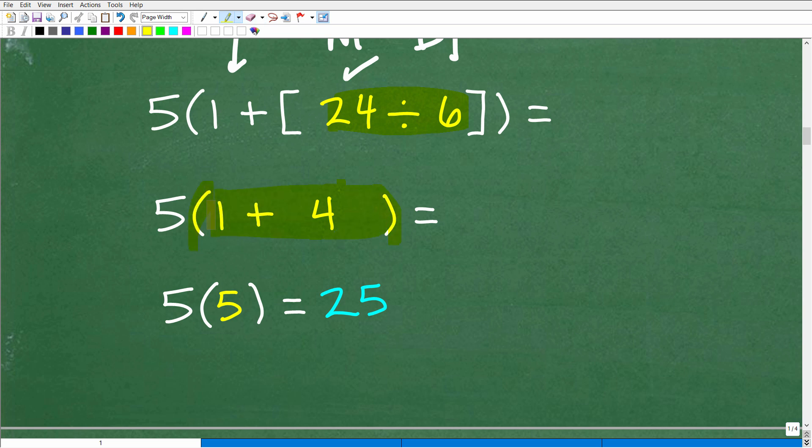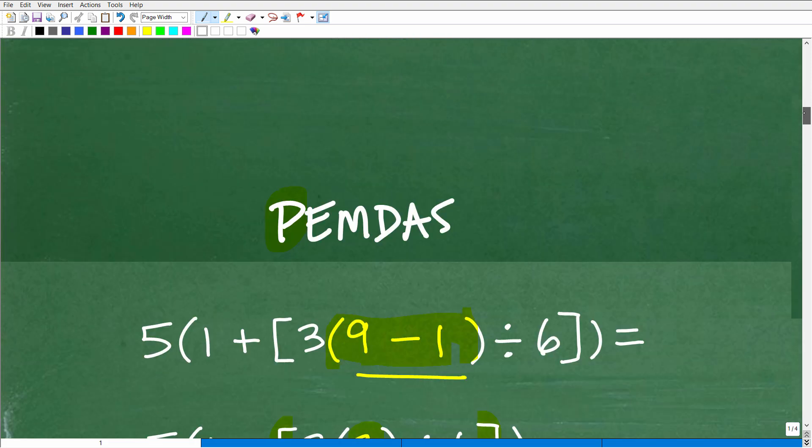And now we're left with this last set of parentheses. And, of course, there's only one thing to do inside of those, and that is 1 plus 4, which, of course, is 5. And now we have 5 times. Anytime you have a number outside of parentheses like this, that means a multiplication. So we have 5 times 5, which, of course, is 25, which, of course, is our answer. Okay. So hopefully this all makes sense to you.